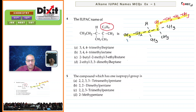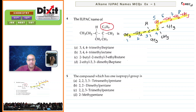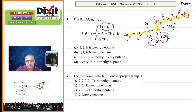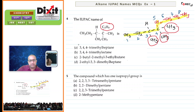Numbering will be 1, 2, 3, 4, 5, 6, 7, 8. Identify substituents or locants: one methyl group, another methyl group, and a third methyl group. Methyl groups are present on the third and fourth carbon atoms. So the name of the compound will be 3,4,4-trimethyl with 8 carbon atoms in the chain, so octane. Option is B.